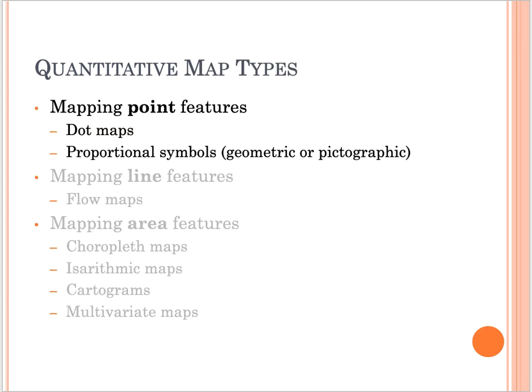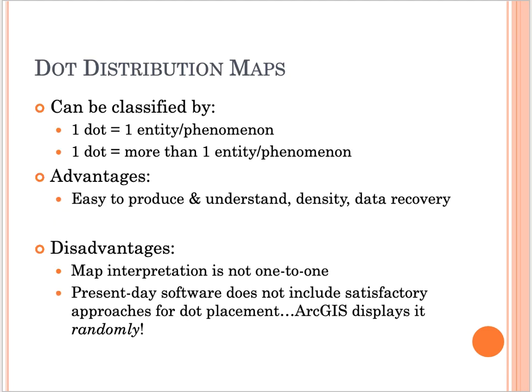For mapping point features on quantitative maps, we have dot maps and proportional symbols. Dot distribution maps can be classified as one dot equals one entity or phenomenon, or one dot can equal more than one entity. Dot distribution maps are commonly used for population density.